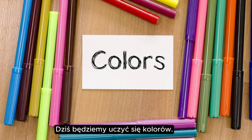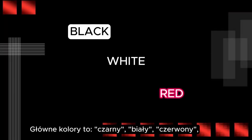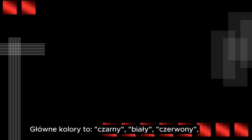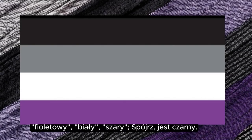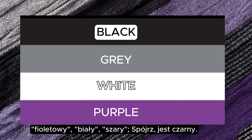Today we are going to learn colors. The main colors are black, white, red, green, yellow, blue, brown, orange, pink, purple, and gray.